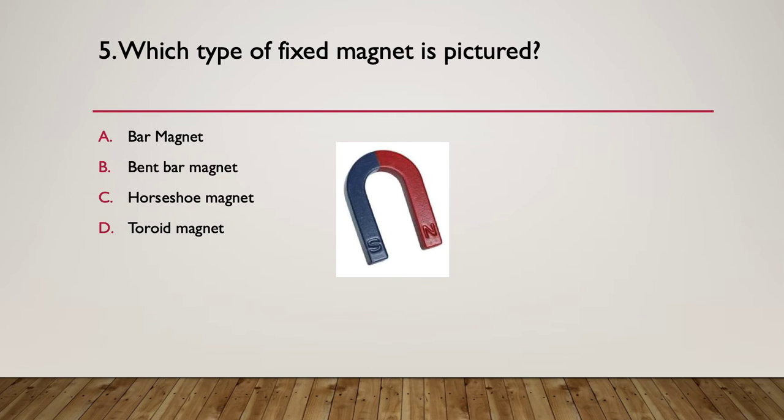Question five, which type of fixed magnet is pictured here? What kind of fixed magnet? A, a bar magnet. B, a bent bar magnet. C, a horseshoe magnet. D, a toroid magnet. Pause here. Here's your hint. The shape should help. What shape is this in the shape of?